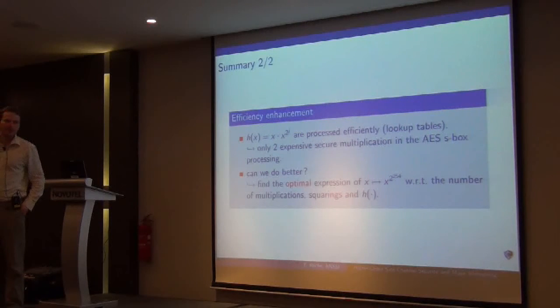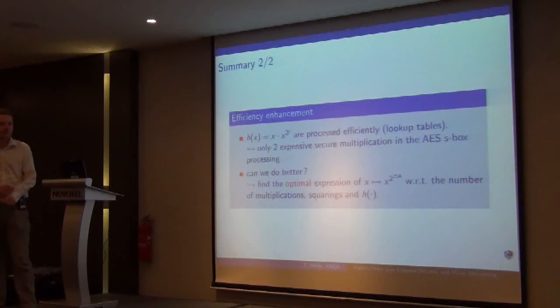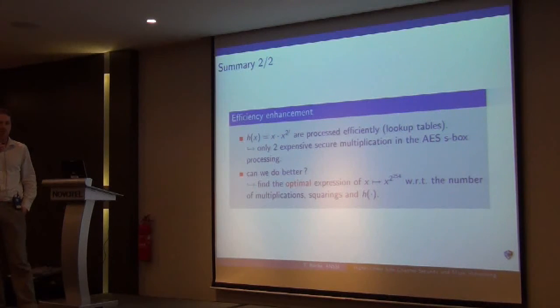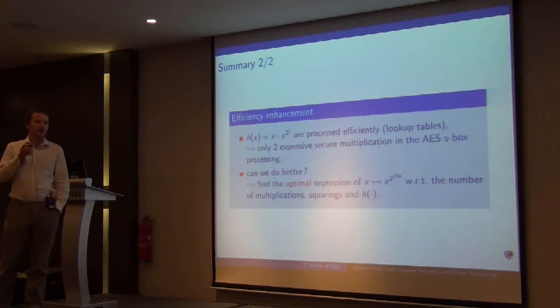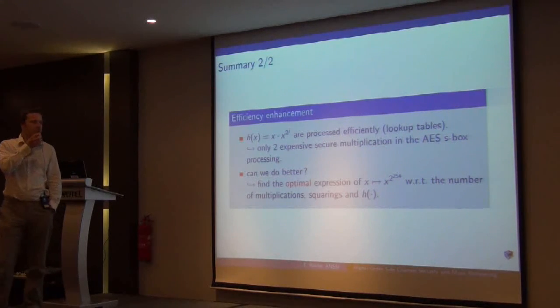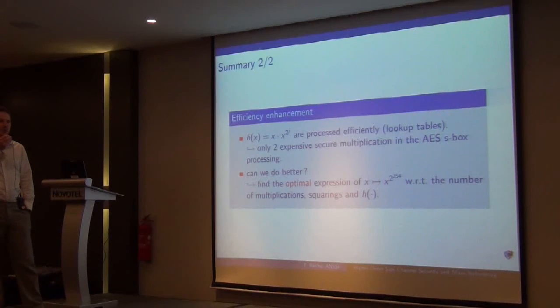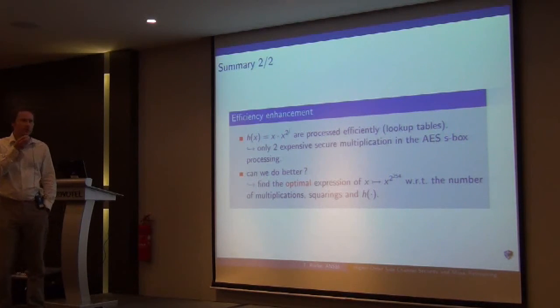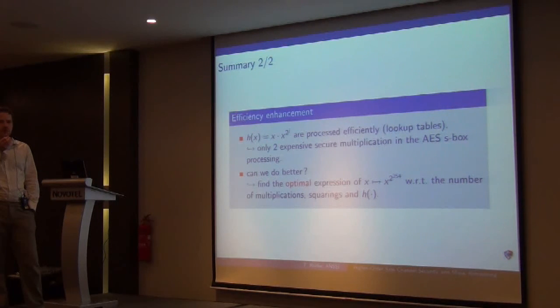Thank you very much. Are there any questions? We have time for one or two questions. I have a question. In the paper you say there's an absolute overhead of 600 bytes compared to the Rivain-Prouff proposal. How much is the relative overhead compared to that proposal? It's 600 bytes absolute, but how much is it? I think the Rivain-Prouff implementation didn't need any ROM, there was no pre-computation. We are the same cost in RAM, but in ROM I think they didn't need any, there was no pre-computation. Other questions? If not, then let's thank the speaker again.